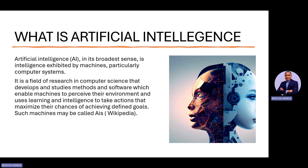One thing you must take home from this is that artificial intelligence is intelligence exhibited by machines — number one. Number two, it comes from the field of computer science. How do these machines exhibit intelligence? It has to do with software, methods, and data algorithms which enable these machines to understand the environment, interact within it, and use learning and intelligence to take action. Based on historical data and information that has been fed to this machine, it is able to interpret that data and make key decisions.